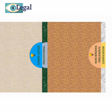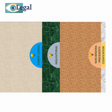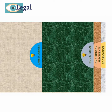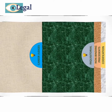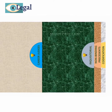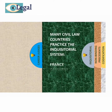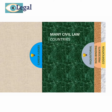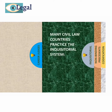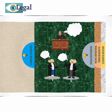Also, most civil law systems practice the inquisitorial system. Note that a civil law system does not necessarily have an inquisitorial system — it just happens that most countries that practice the civil law system have an inquisitorial system. This means that trials are dominated by judges, as opposed to the adversarial system practiced by common law countries, in which the judge is merely an umpire who does not interfere.